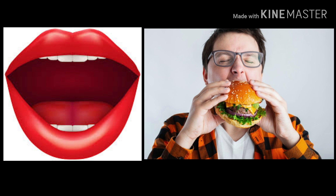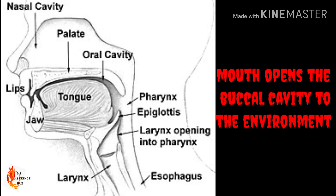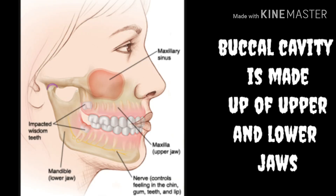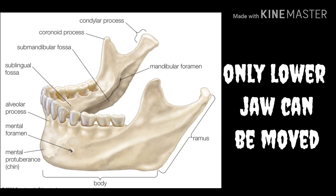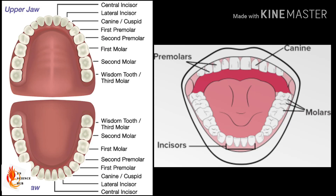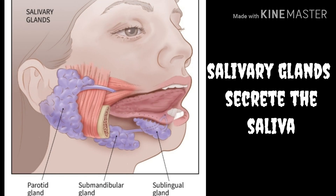The mouth connects the digestive tract with the external environment. Food first enters a cavity known as the buccal cavity. The buccal cavity is made up of jaws — upper jaw and lower jaw. The lower jaw is special because it is the only movable bone in the face. The buccal cavity is surrounded by the cheeks, and teeth are present in both the upper and lower jaw.